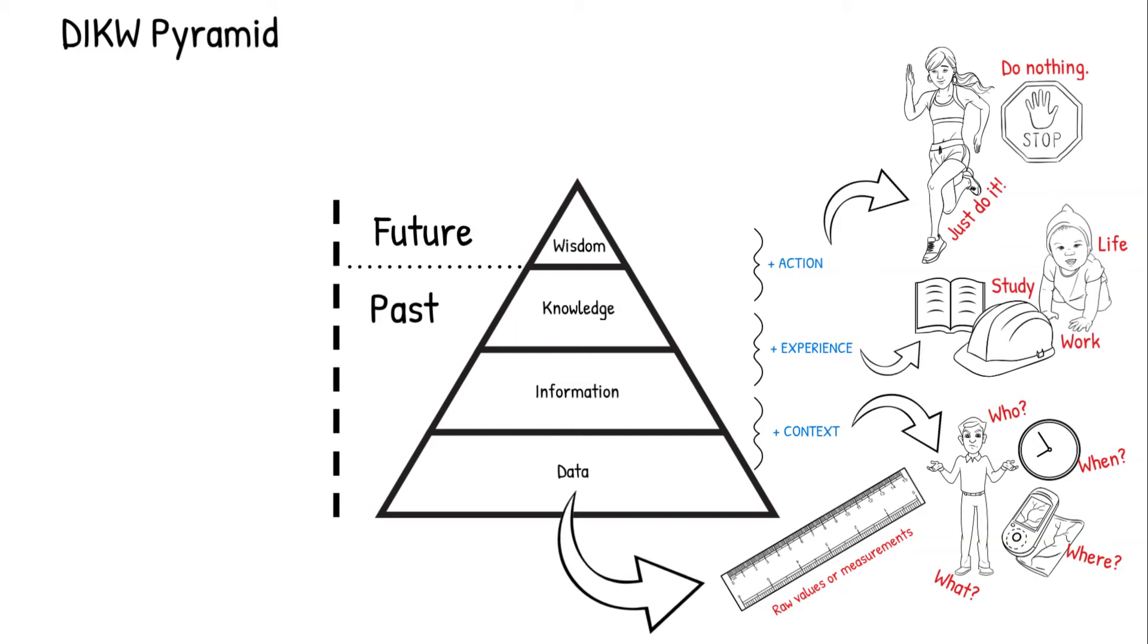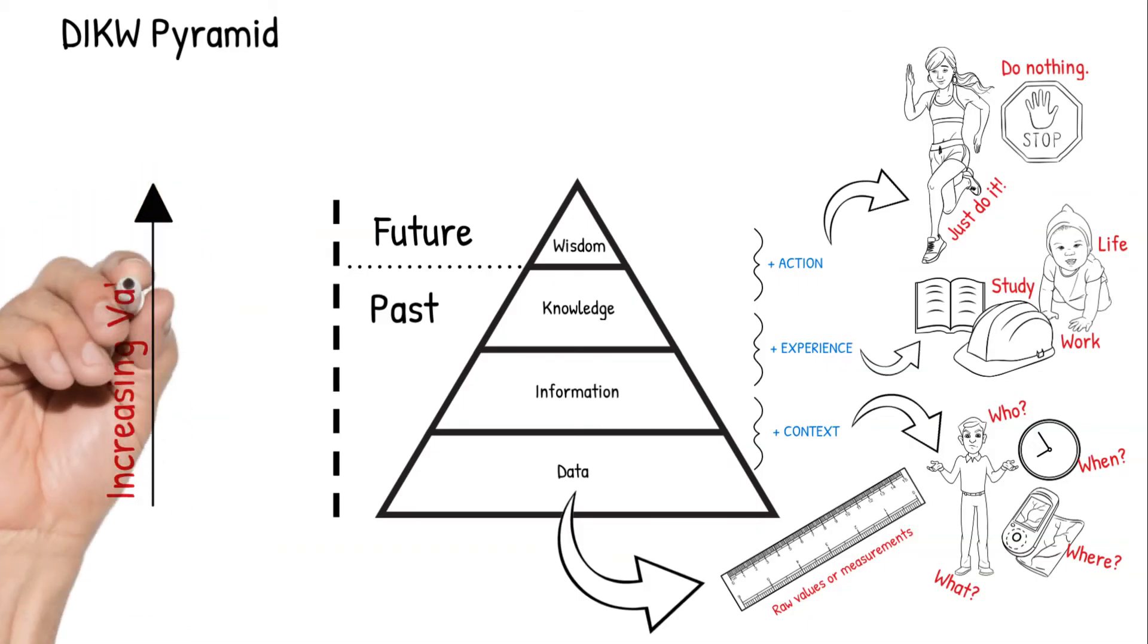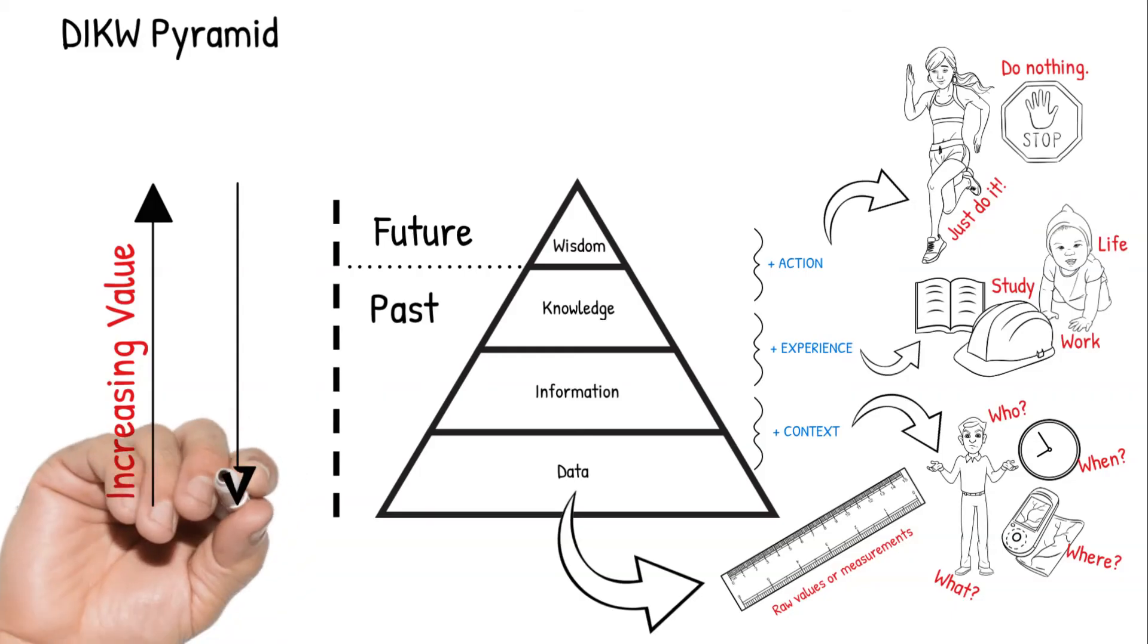As you move up the pyramid you'll also notice each tier has more value than the tier before it. The inverse of that is as you move down the pyramid, the tier below has increasing meaning. As an example, information is more valuable than data, as data has less meaning than information.